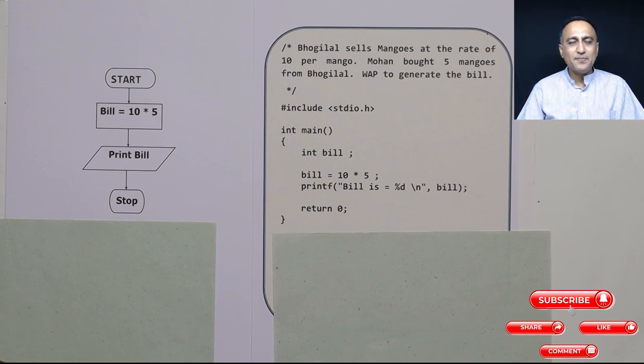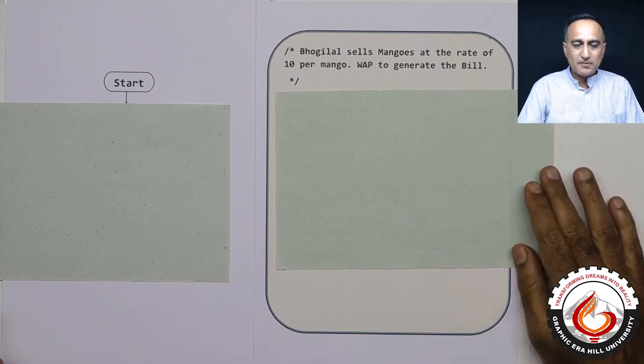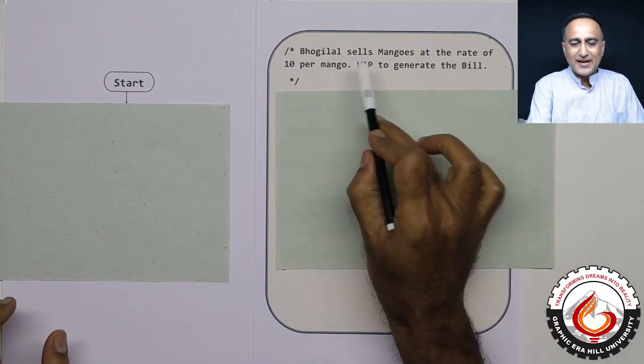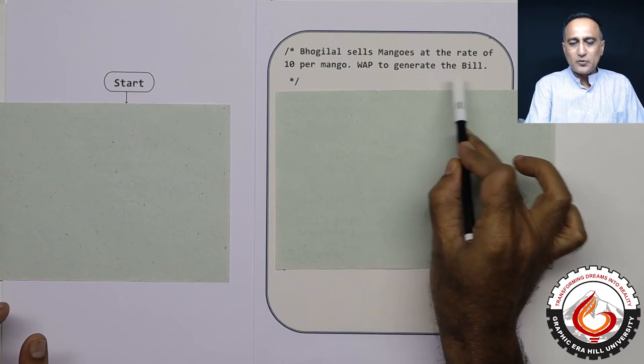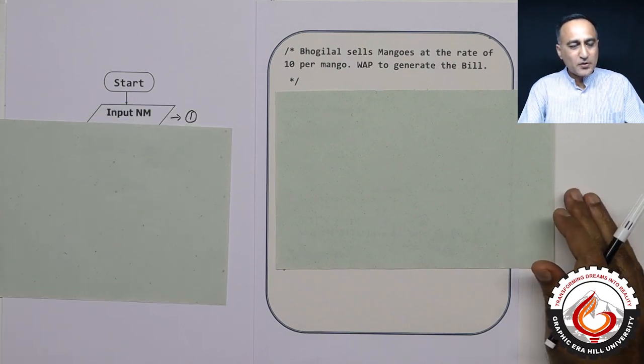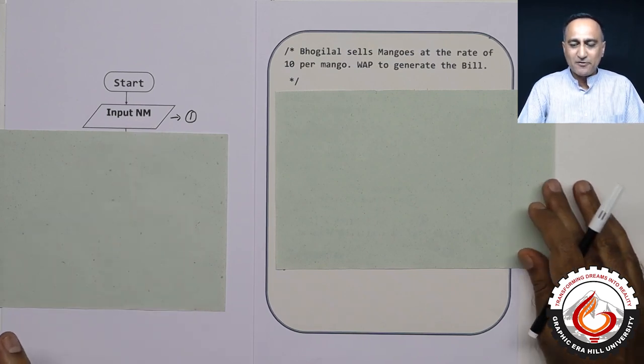In the Bogilal series of flowcharts, let us see what problem number two asks us to do. It says that Bogilal sells mangoes at the rate of 10 per mango. Write a program to generate the bill. Obviously, the price which Bogilal sells a mango is 10 rupees. But here if you see the quantity is not given. So the first thing I need to do in the flowchart is I need to ask the user to enter nm which represents the number of mangoes.